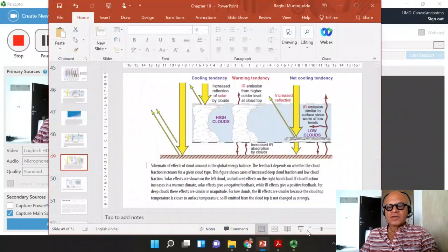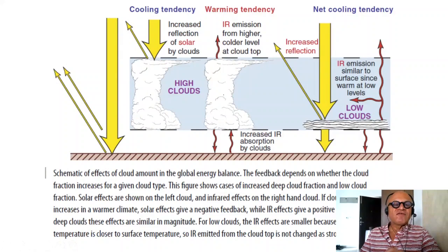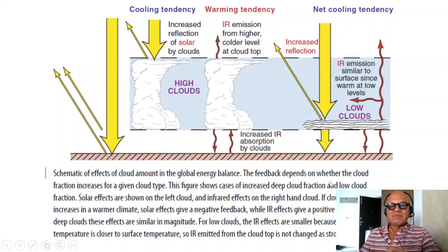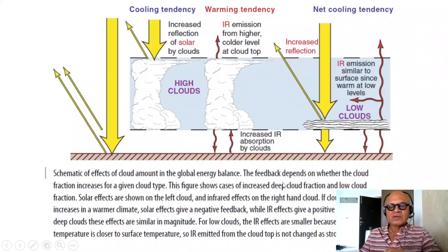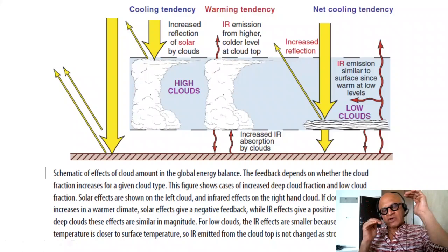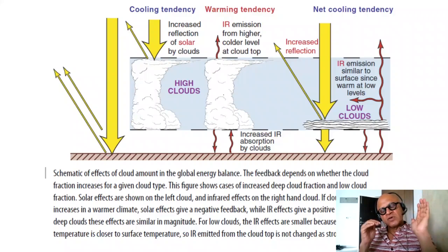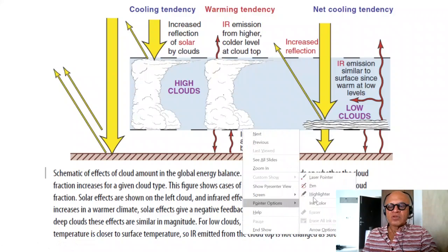Now, what happens with cloud feedbacks? Albedo changes are also going to be induced by clouds. This figure shows cases of increased deep cloud fraction and low cloud fraction — solar effects are shown on the left of the cloud, and infrared effects on the right. Clouds can have shortwave forcing and longwave forcing depending on whether they are increasing cloud-top albedo and reflection of solar radiation, and whether they are absorbing or reducing the outgoing longwave, depending on the type of cloud.